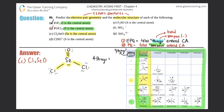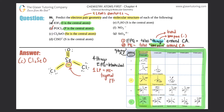Four things means the electron pair geometry is tetrahedral. Looking at lone pairs, selenium has one lone pair. With four things and one lone pair, the molecular structure is trigonal pyramidal. So for part c, the electron pair geometry and molecular structure are different.